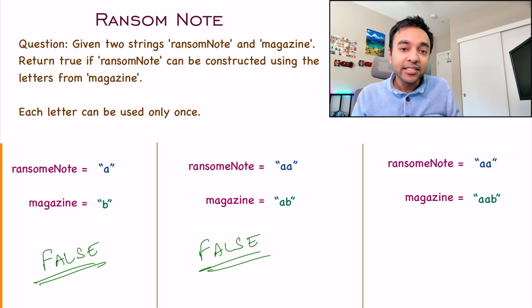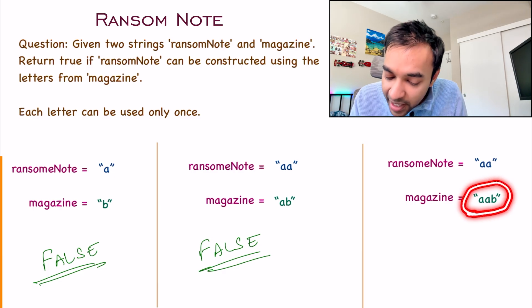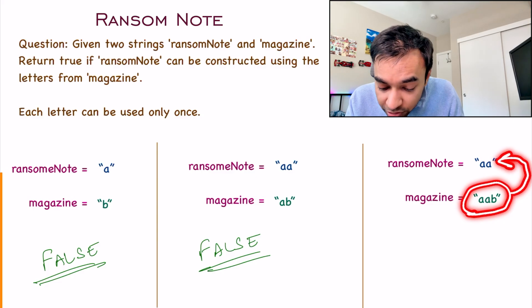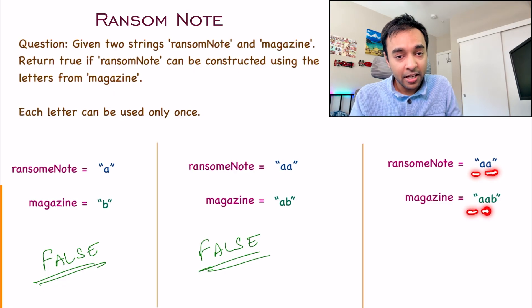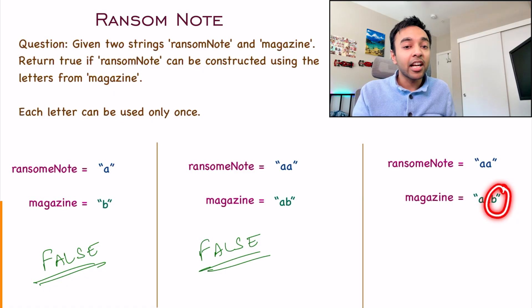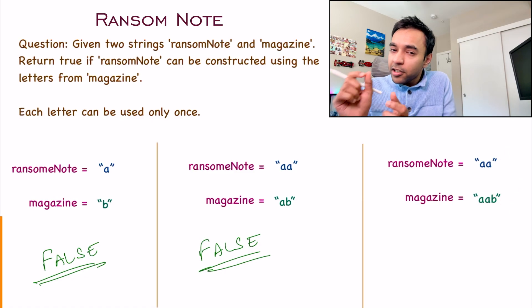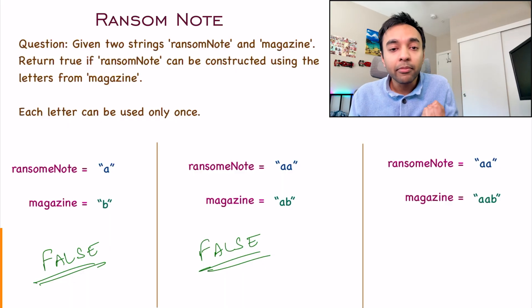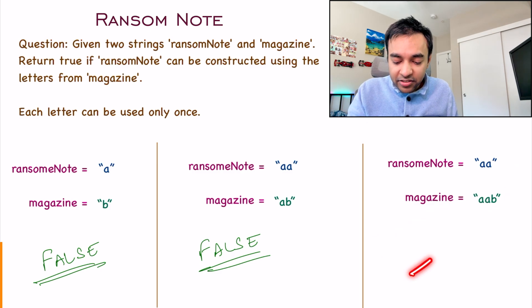This brings us to the final test case which is valid. I have A, A, and B available. Can you construct this ransom note? Yes, because you had two A's available in the magazine. Notice that you don't have to worry about any extra characters. B is available, but it's not necessary that you use it. That is the only edge case to be careful about. The answer to this test case will be true.